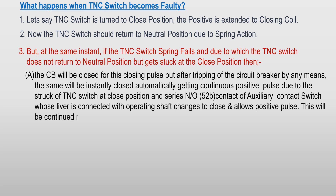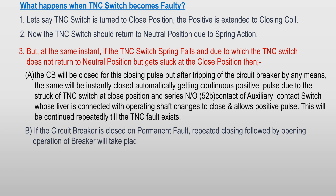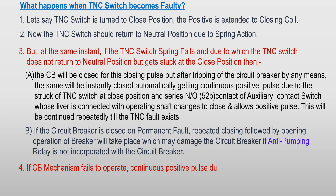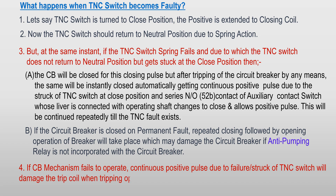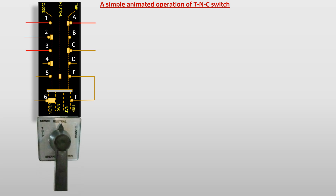This will be continued repeatedly until the TNC fault is corrected. If the circuit breaker is closed on a permanent fault, repeated closing followed by opening operations will take place, which may damage the circuit breaker if an anti-pumping relay is not incorporated. If the circuit breaker mechanism fails to operate, a continuous positive pulse due to the stuck TNC switch will damage the trip coil when a tripping operation is attempted. Please watch the operations by the TNC switch to get a clear understanding of switching of the circuit breaker.